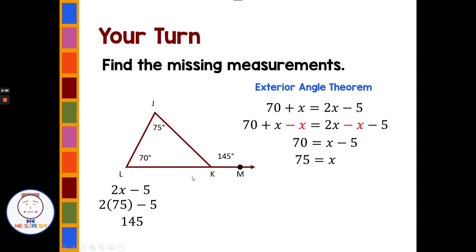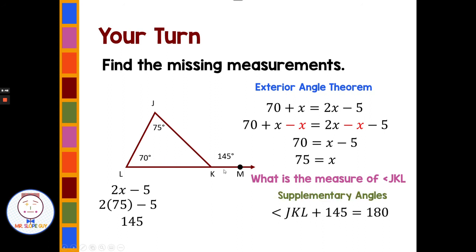To find angle JKL, we use supplementary angles: JKL plus 145 adds up to 180. Subtract 145, and we get angle JKL is 35 degrees. Hopefully you did pretty good on that on your own.